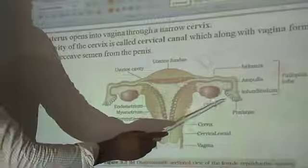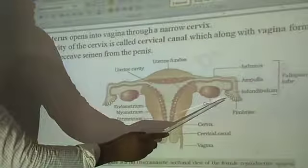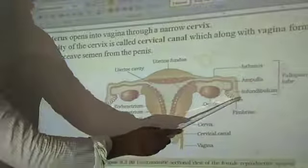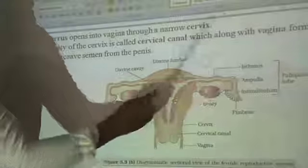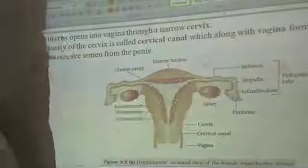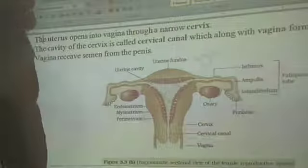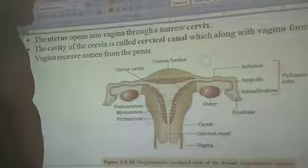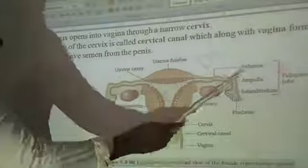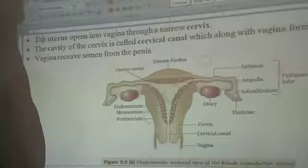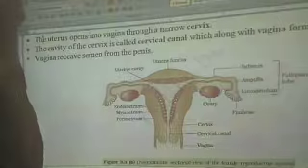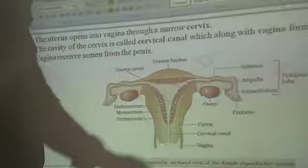The ovum released from the ovary is collected by the fimbriae and enters the ampulla region. In the ampulla region, fertilization occurs — the fusion of both male and female gametes — which leads to the formation of a zygote.